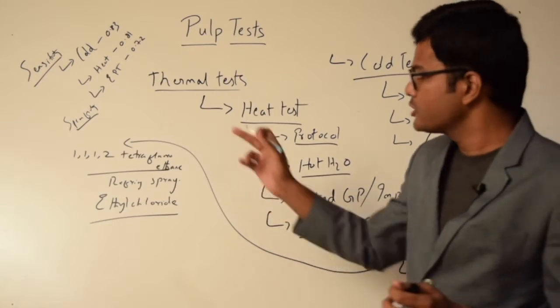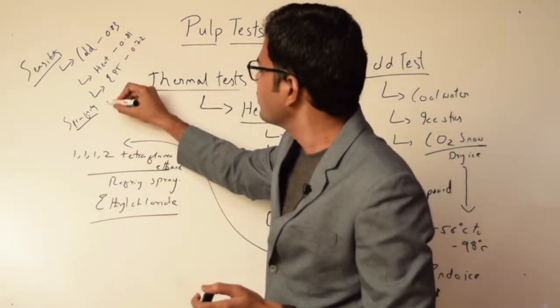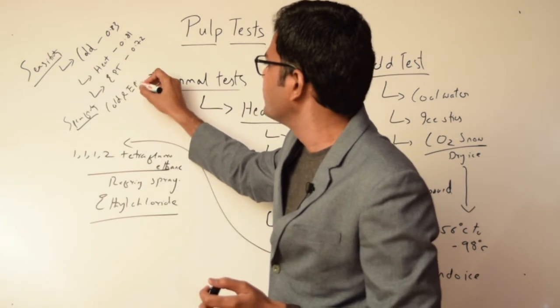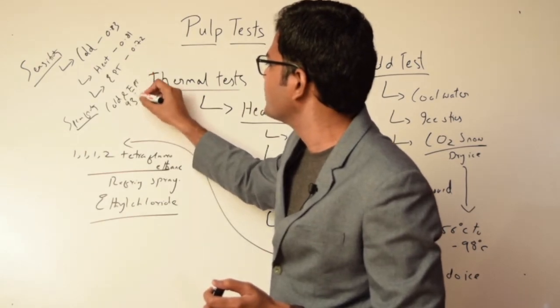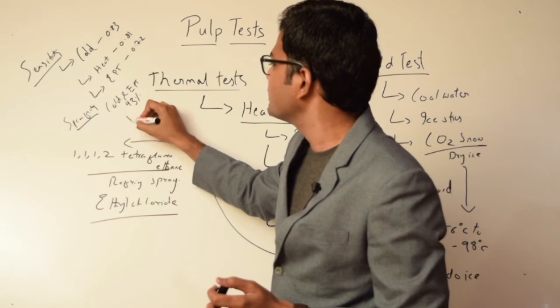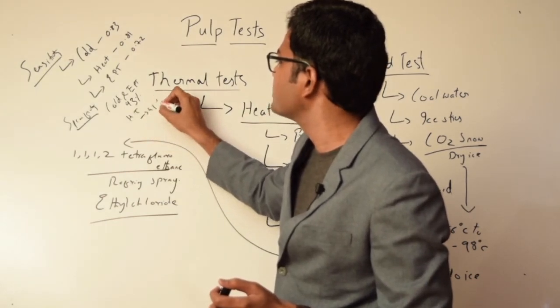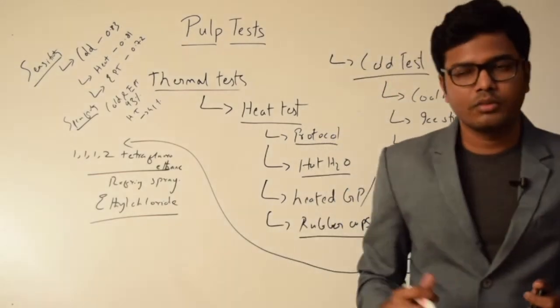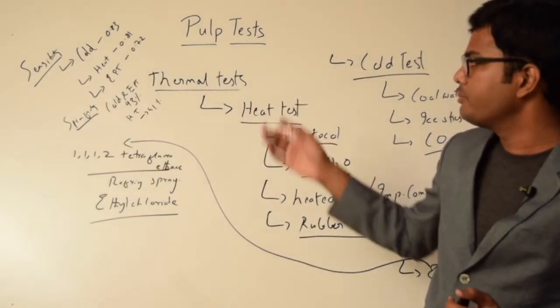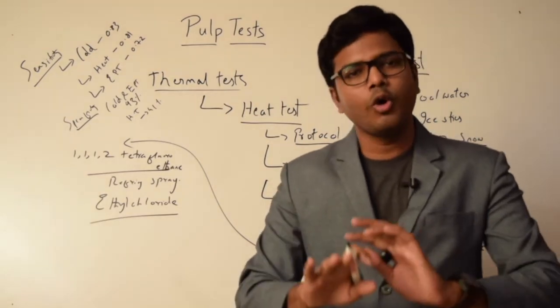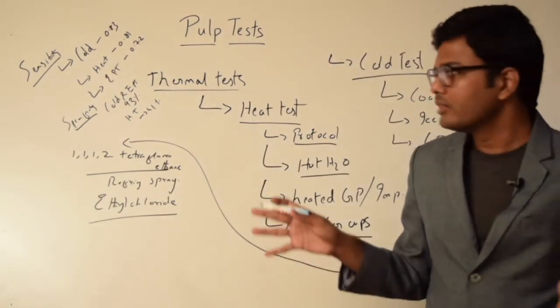The specificity of the cold test and EPT is in the range of 93%, and the specificity for heat test is only 41%. So based on this, we can say that cold and EPT are more specific than heat test.